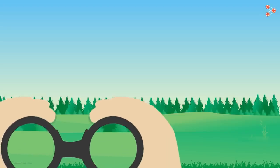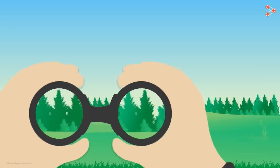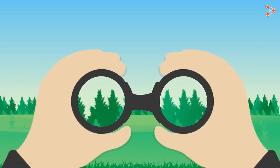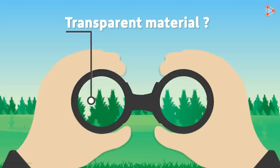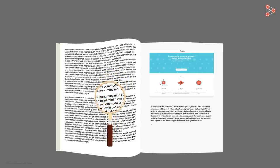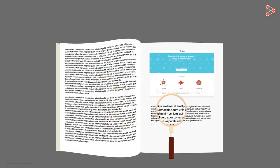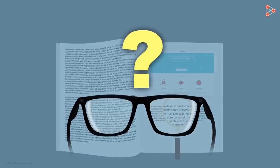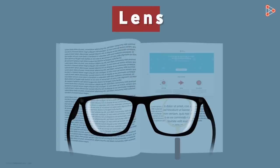Have you ever wondered why faraway objects appear close when viewed through binoculars? What are the two transparent materials in binoculars that make objects appear nearer? What do we use to see tiny things or read text with small font size? Why do we wear spectacles? The answer to all these questions in one word is a lens.